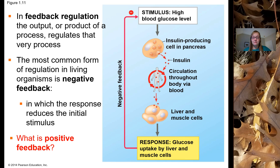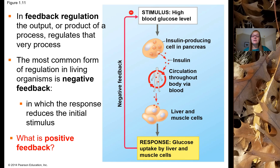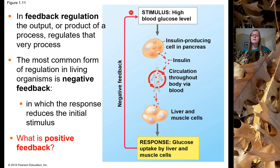An example of positive feedback — where the end output stimulates the process that created it — is clotting. When you get a cut, the first thing your body needs to do is plug that hole so you don't bleed out. Blood cell fragments called platelets are partially responsible for clotting at that wound. The platelets aggregate at that injury site, and as they aggregate they secrete chemicals that encourage even more platelets to come. When more platelets come, they produce even more of that chemical and even more platelets arrive — a building effect that continues to stimulate the clotting process.